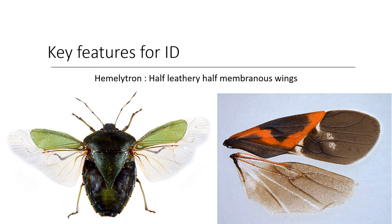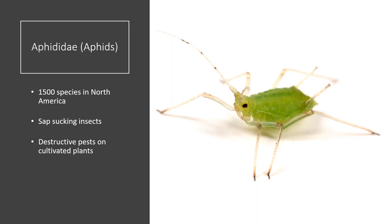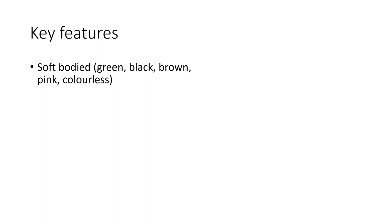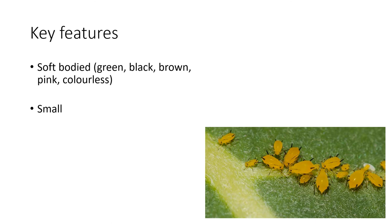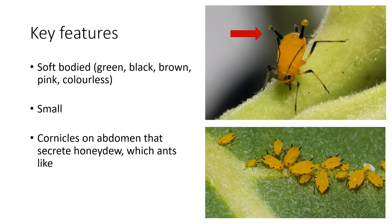For our first family, Aphididae — aphids are important insect pests. They sometimes have mutualistic relationships with other insect groups, providing honeydew in exchange for protection. Ants and wasps have been seen to have this relationship with aphids. There are over 1,500 species in North America. Key features: they are soft-bodied, colors can vary from green, black, brown, pink, to colorless. They are very small and have cornicles on their abdomens where they secrete honeydew — a sugary excrement that ants and other insects are attracted to.